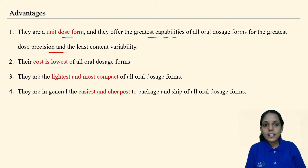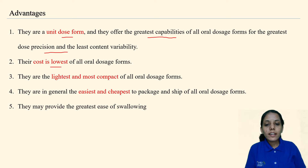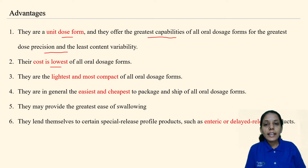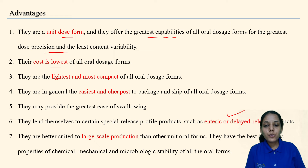Tablets are in general the easiest and cheapest to package and ship of all dosage forms. They may provide the greatest ease of swallowing and lend themselves to special release profiles, for example enteric or delayed release. They are better suited to large-scale production than other unit oral forms, and have the best combined properties of physical, mechanical, and microbiological stability.